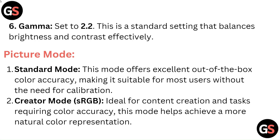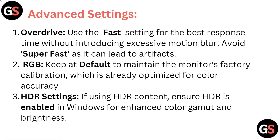Creator Mode — sRGB: ideal for content creation and tasks requiring color accuracy, this mode helps achieve a more natural color representation. Advanced Settings — Overdrive: use the fast setting for the best response time without introducing excessive motion blur. Avoid superfast as it can lead to artifacts. RGB: keep at default to maintain the monitor's factory calibration, which is already optimized for color accuracy.